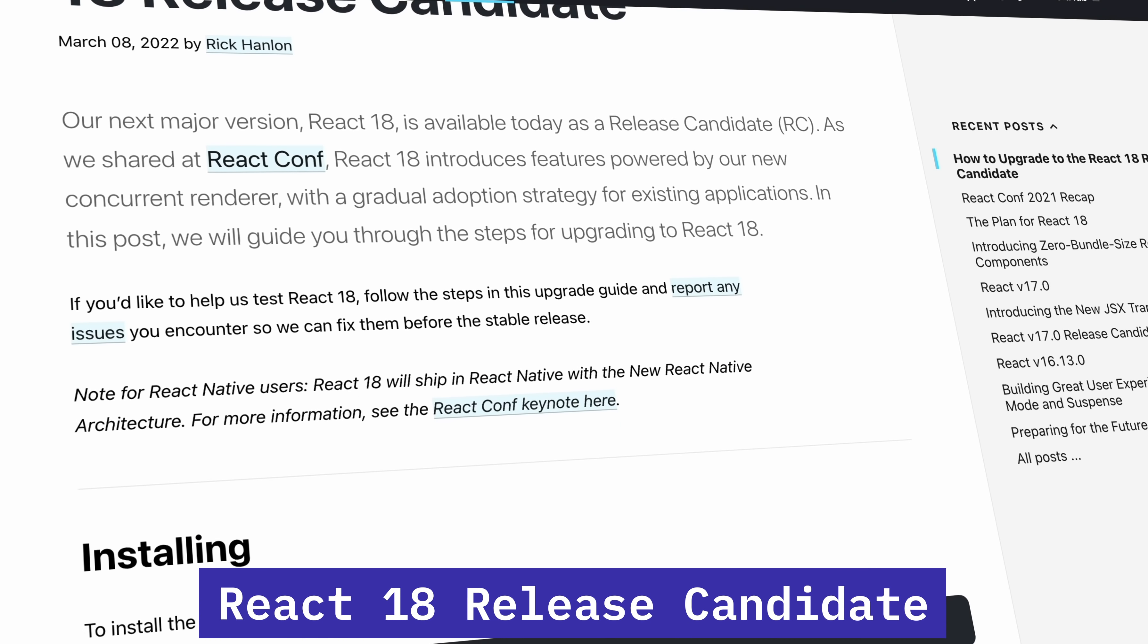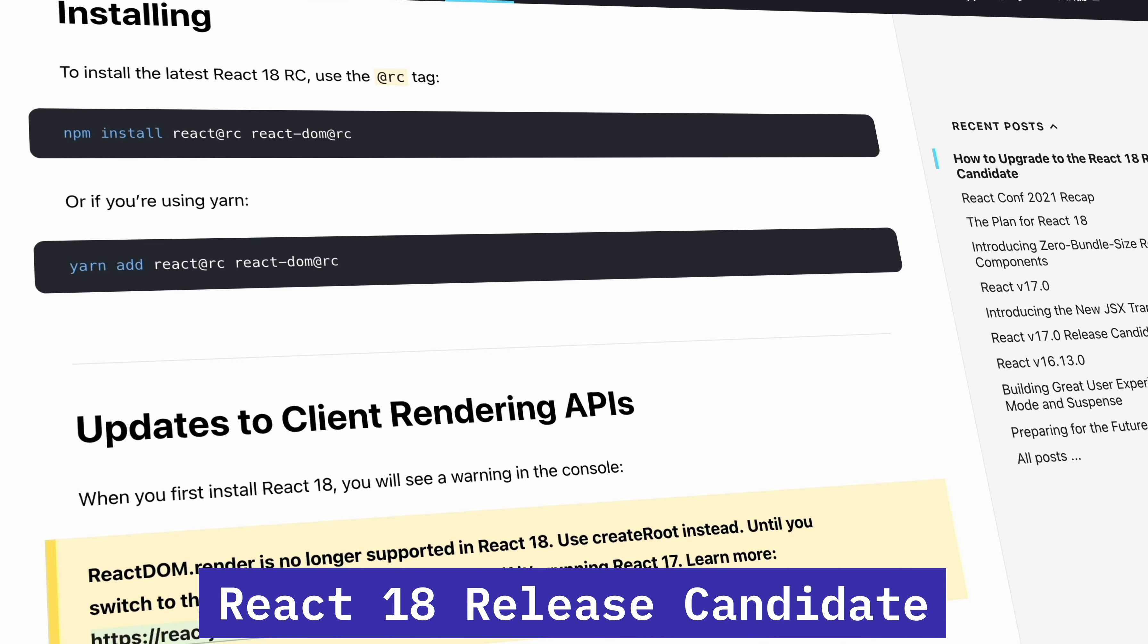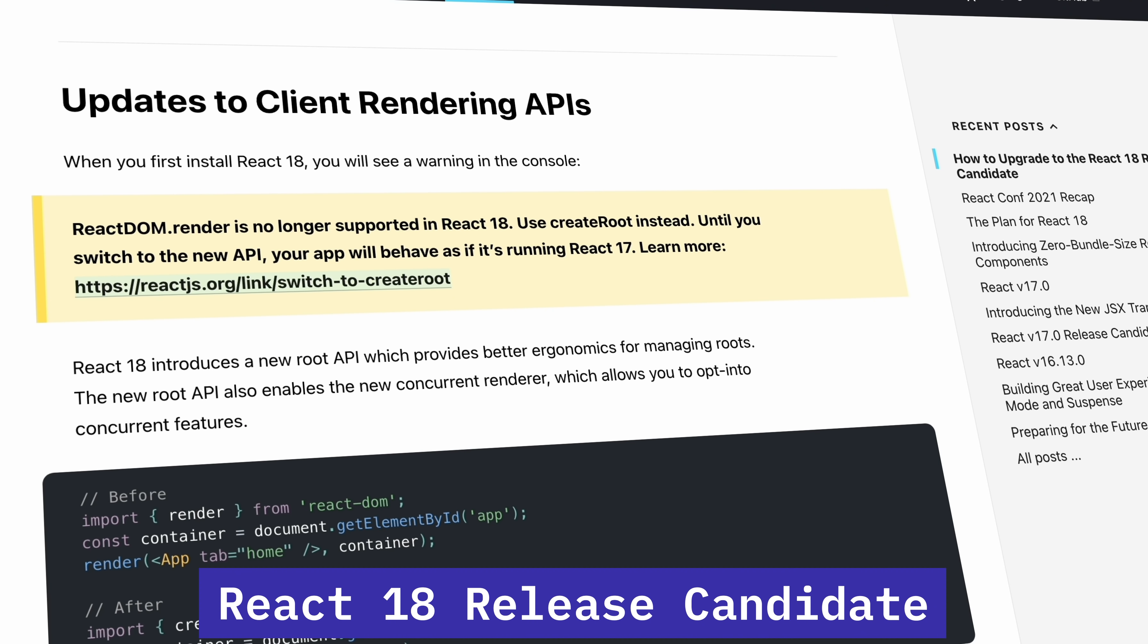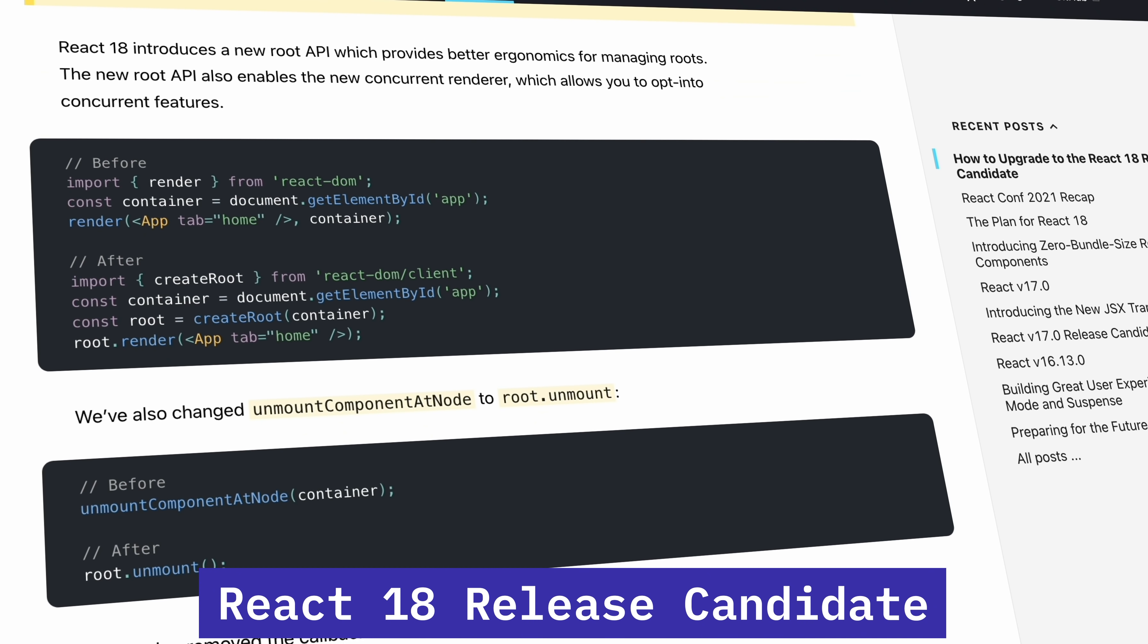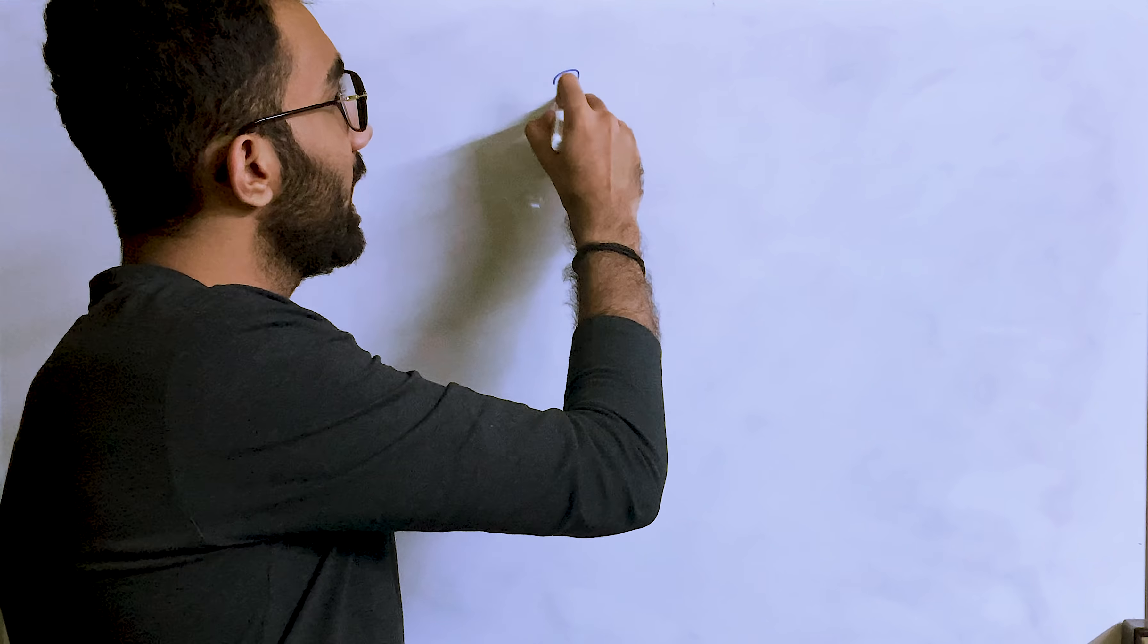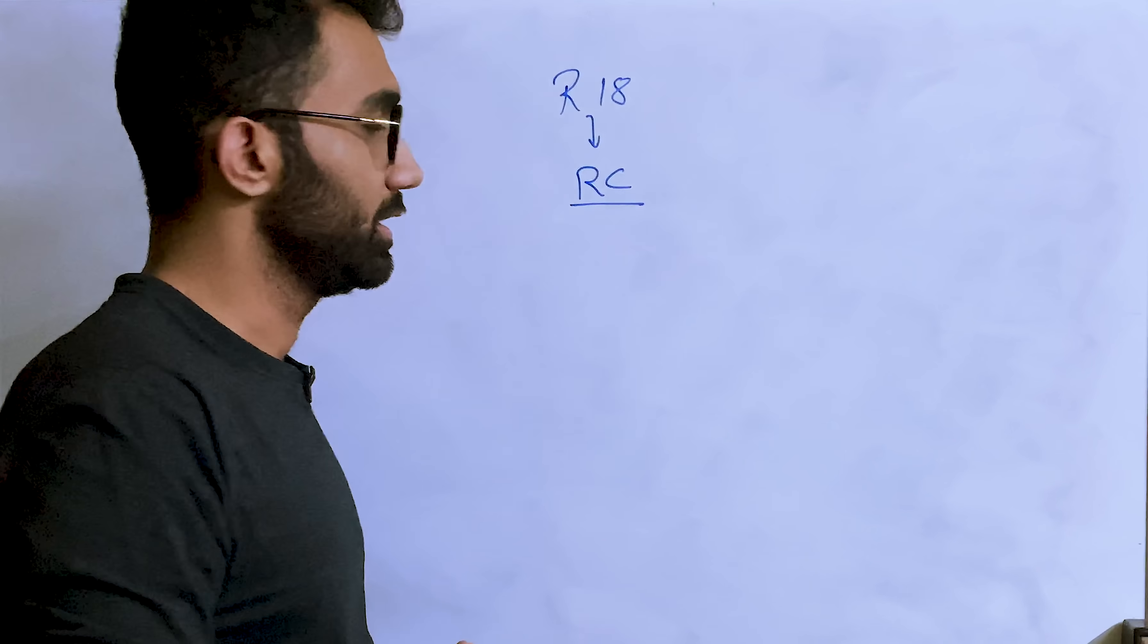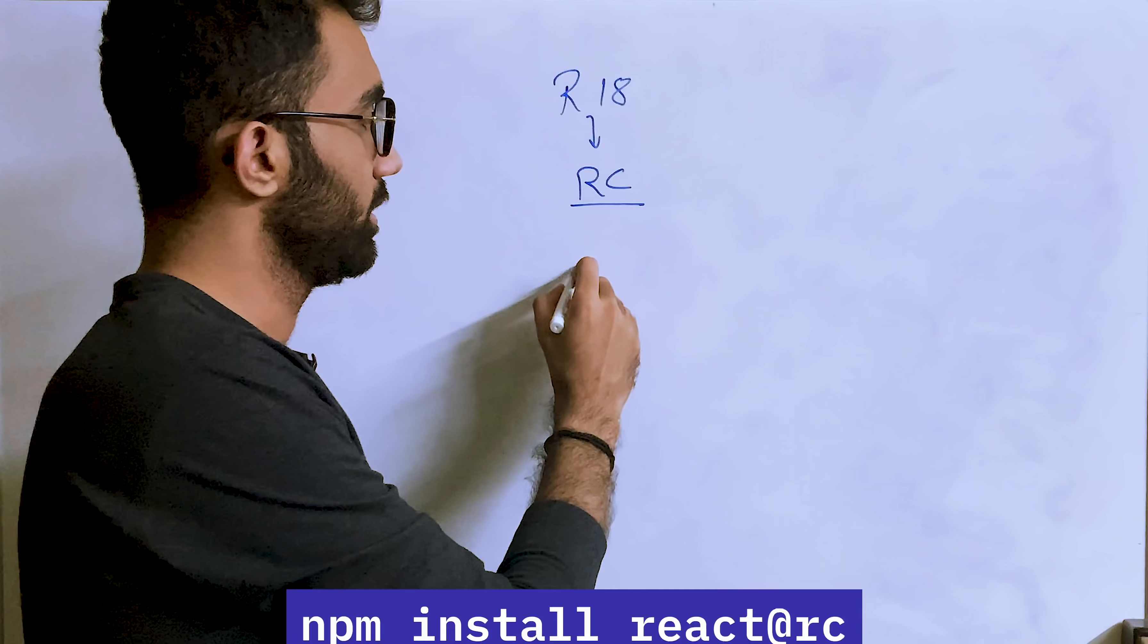React has finally released React 18 in release candidate mode, which means it is now officially stable and there will not be a lot more changes or things added to React 18. React 18 is now in release candidate mode, so you can go ahead and install it using npm install.